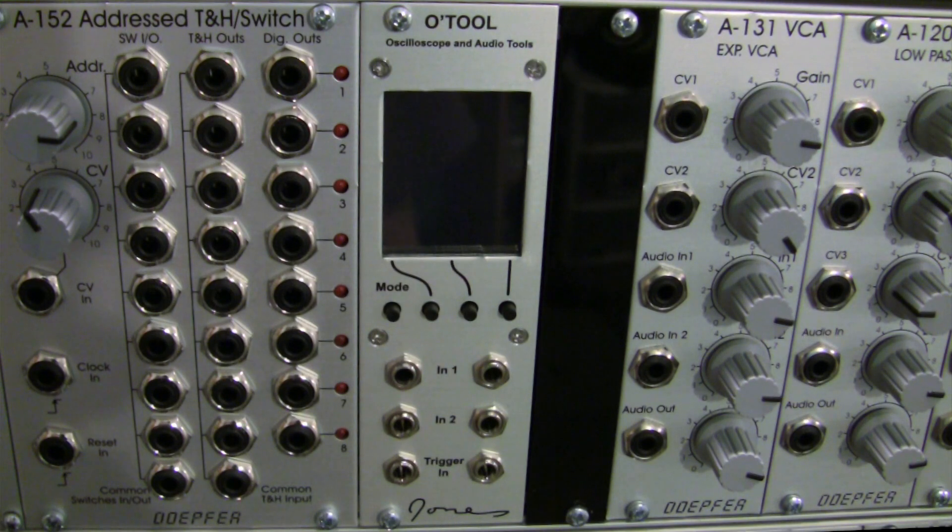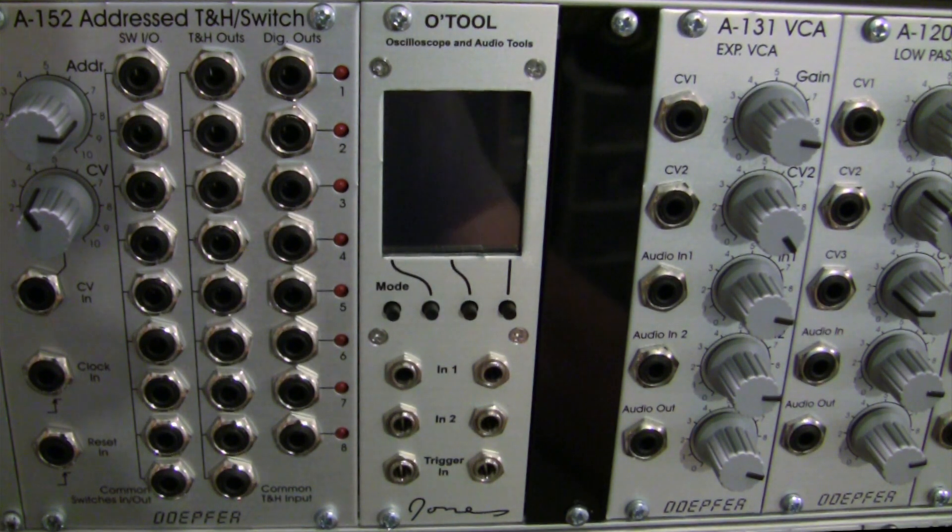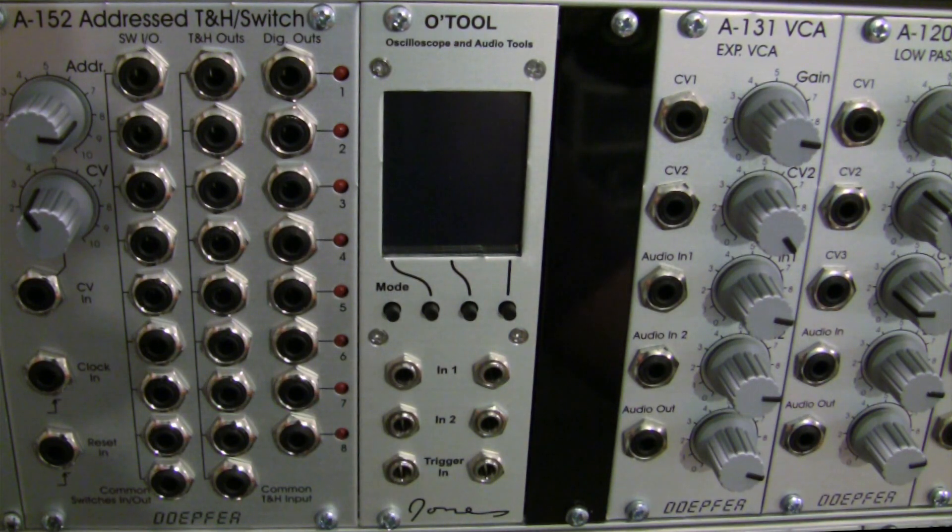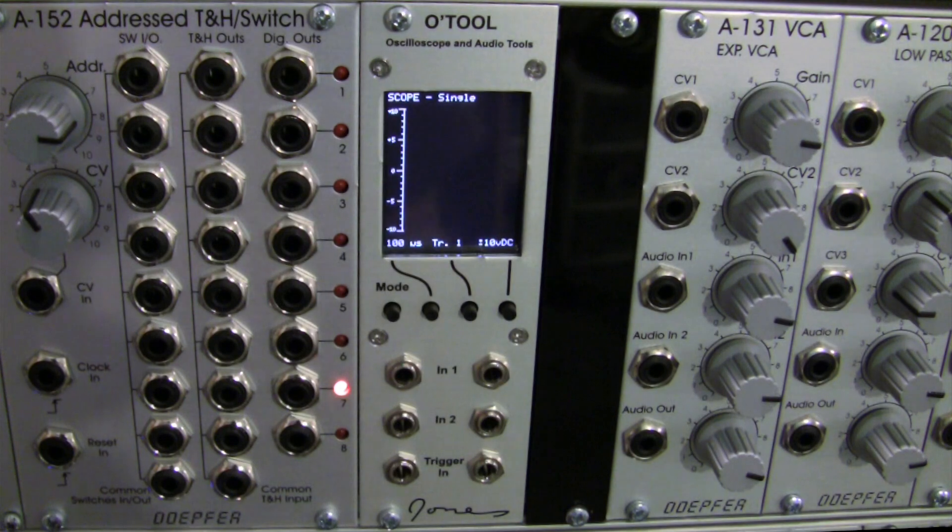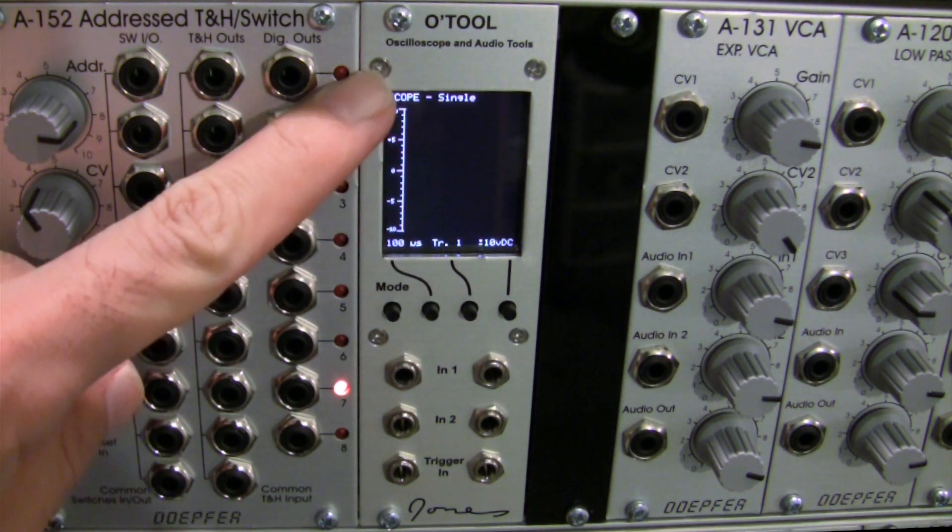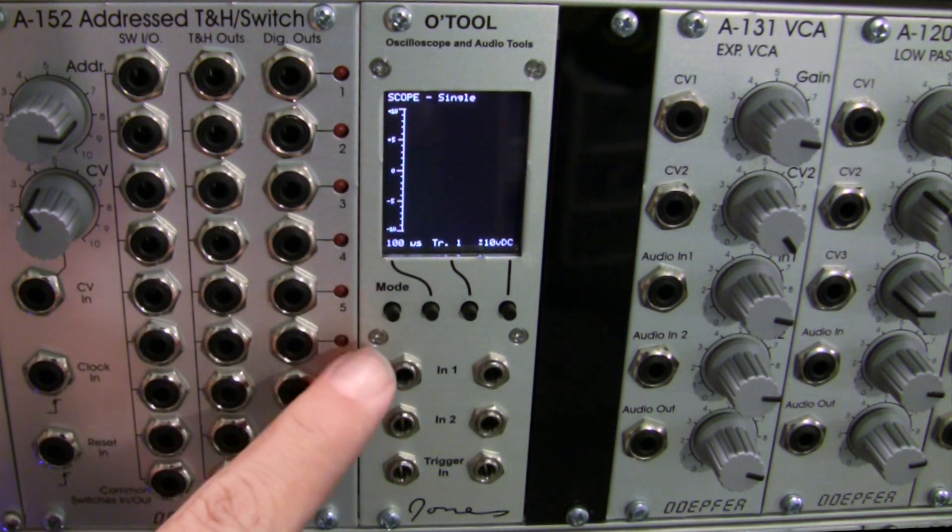All right, and welcome to a segment called Profile. Today we're going to be looking at the Dave Jones Design O-Tool oscilloscope and audio tools Eurorack module. Go ahead and power it on. So the O-Tool oscilloscope and audio tools module is fairly straightforward in its layout. You have an LCD here at the top, immediately below that you have four buttons.